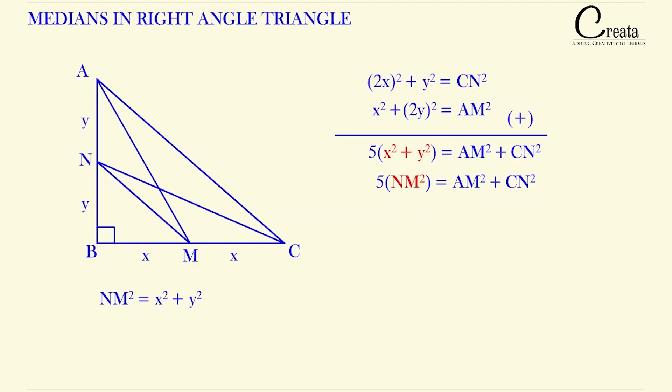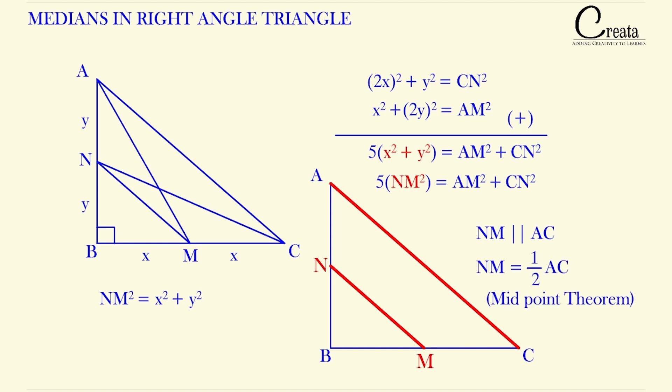Further, if we observe the triangle ABC and the line segment NM, here N and M are the midpoint of the side AB and BC respectively. Are you able to compare this with our midpoint theorem? N and M are the midpoint and as per the midpoint theorem, the line segment joining the midpoint of two sides of the triangle is parallel to the third side and is also equal to half of the third side. So we can say NM and AC are parallel to each other and also NM is half of AC. So can we replace NM with AC by 2?